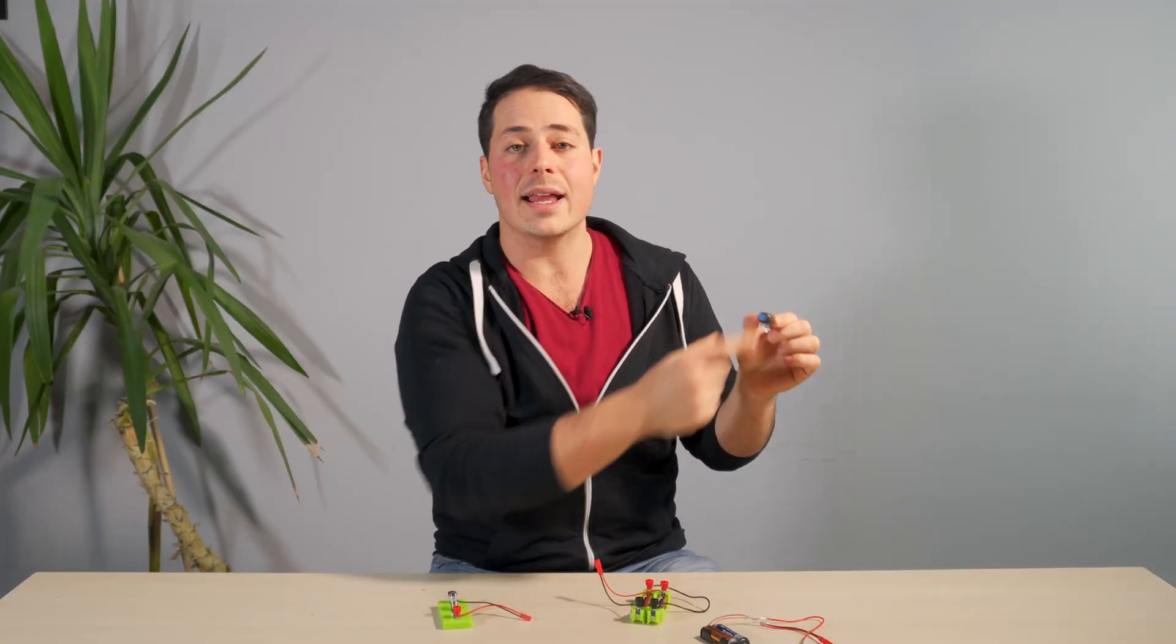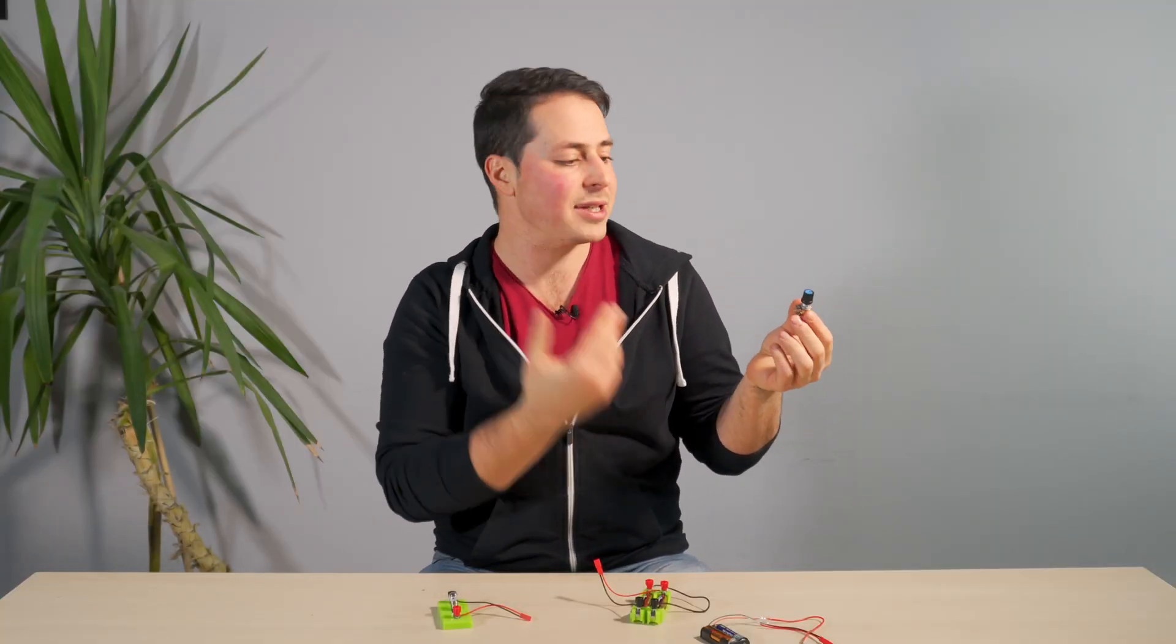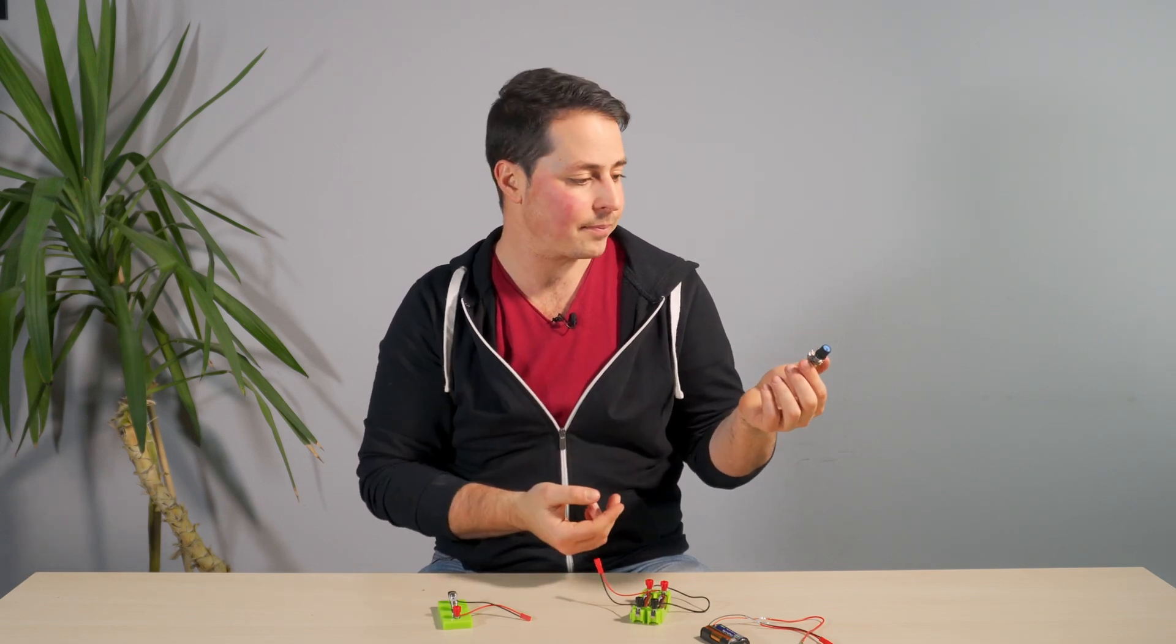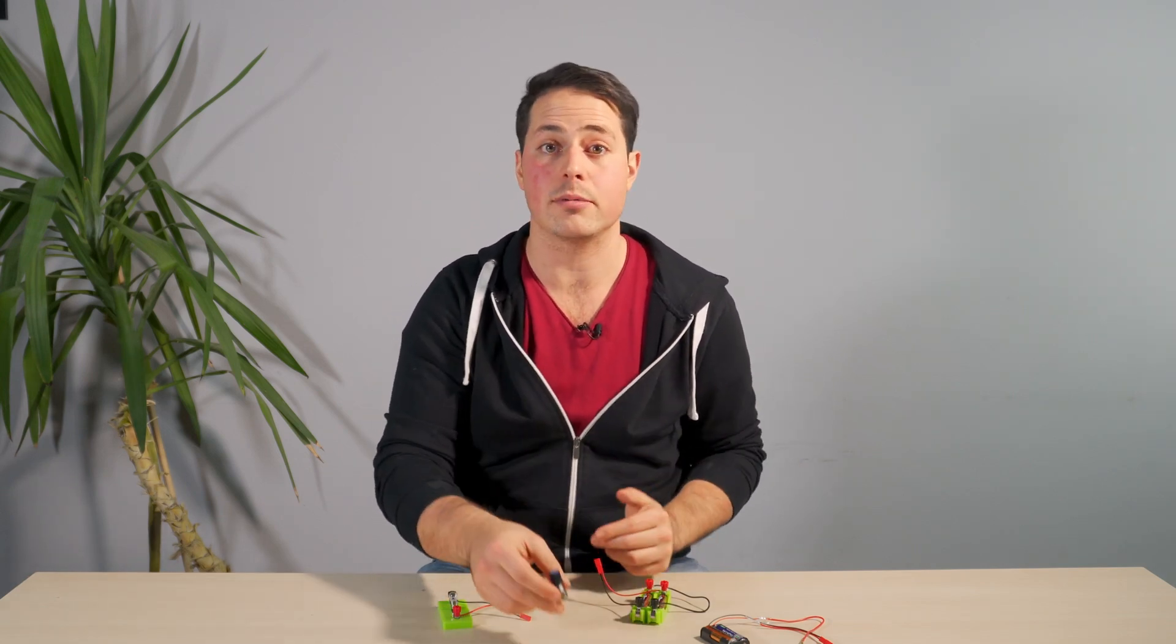As we twist it, it changes how much it resists the flow of electricity. And that's the job of all resistors, to resist the flow of electricity, to limit and lower the current going through a circuit, so as to protect all the components.